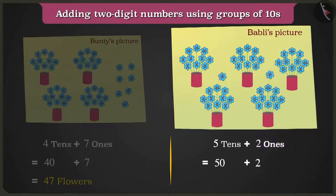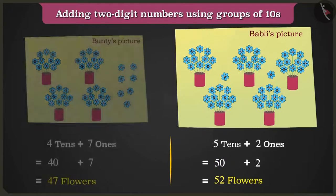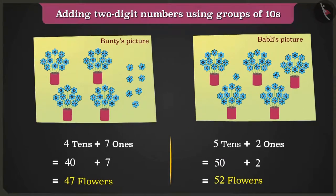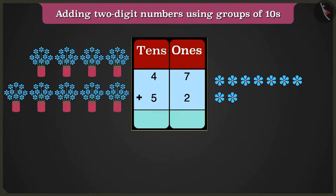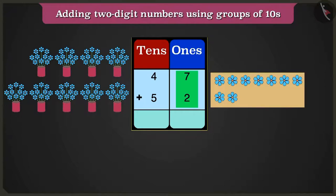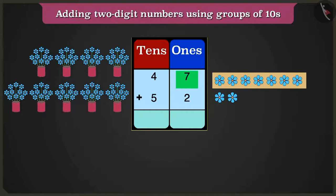To find out the total number of flowers, we will write their number in the table of tens and ones. Yes, now we will first add the number in the ones box. We have to add seven ones and two ones. The count after seven is eight and nine. That is seven ones plus two ones equal nine ones.